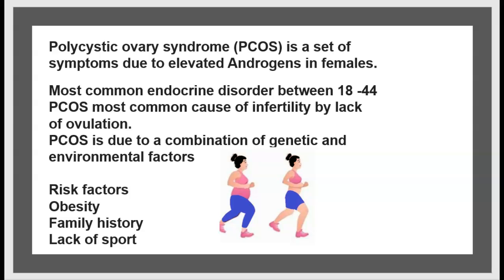Polycystic ovarian syndrome, PCOS, is a set of symptoms due to elevated androgen levels. It is the most common endocrine disorder between ages 18 and 44, and the most common cause of infertility by lack of ovulation. PCOS is due to a combination of genetic and environmental factors.